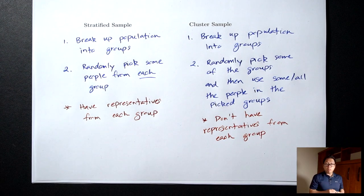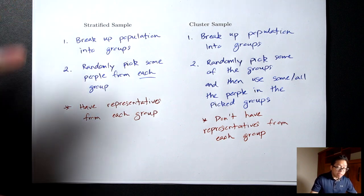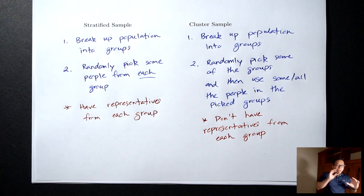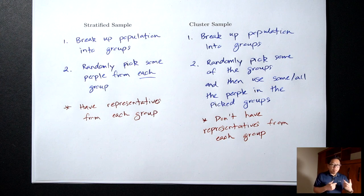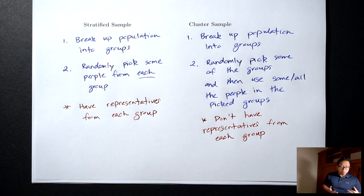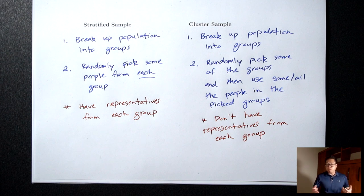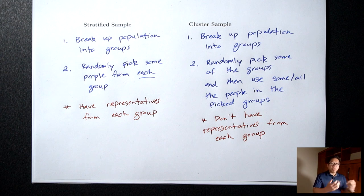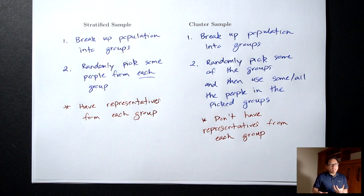That's the major difference between stratified and cluster. In a stratified sample, you expect the people in each group to be different, so it's important to have a representative from each group — you often break groups up by gender or ethnicity. In a cluster sample, you break people into groups but don't expect much difference between groups, so it's okay not to have representatives from each group.